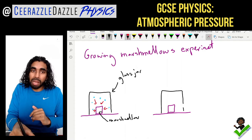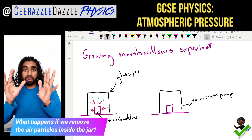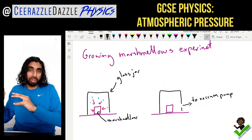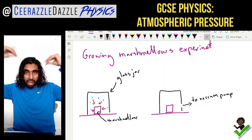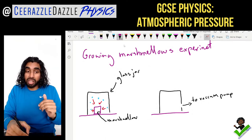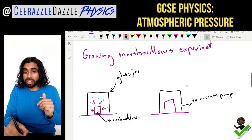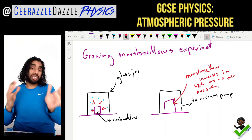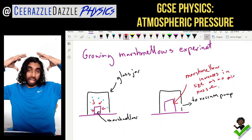What happens if we suction out the air particles? We attach a vacuum pump to the same glass jar and drag out all the air particles. Now there are no more particles acting on the marshmallow — nothing pushing down on it. So the marshmallow can expand and will increase in size. You simply place it in a glass jar, suction out the air particles, and because there is no more air pressure acting upon it, it will grow.